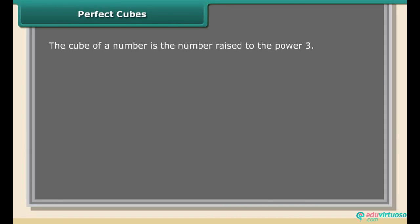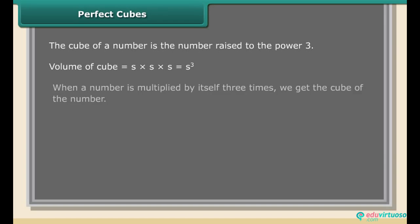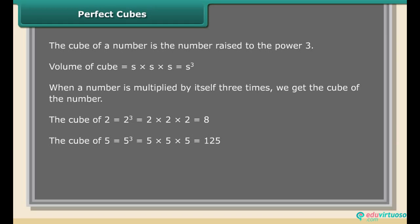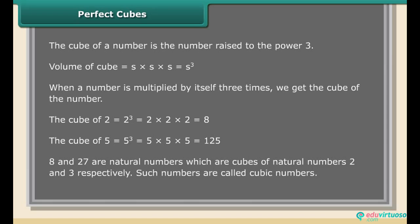Perfect cubes. The cube of a number is the number raised to the power 3. The volume of a cube is equal to s × s × s, which is equal to s³. When a number is multiplied by itself three times, we get the cube of the number. The cube of 2 is 2³ = 2 × 2 × 2 = 8. The cube of 5 is 5³ = 5 × 5 × 5 = 125. Numbers like 8 and 27 are cubes of natural numbers 2 and 3 respectively; such numbers are called cubic numbers.